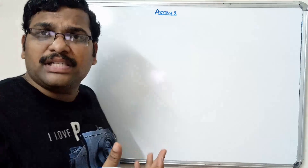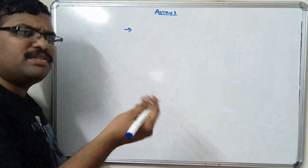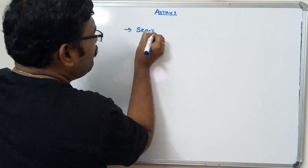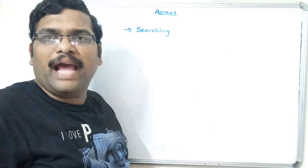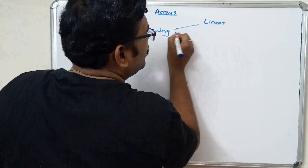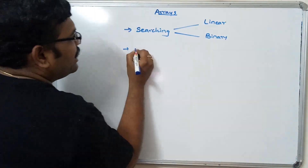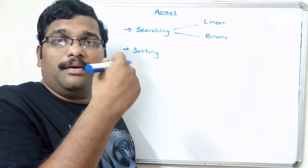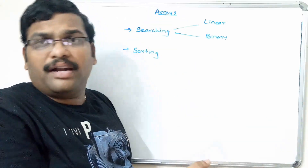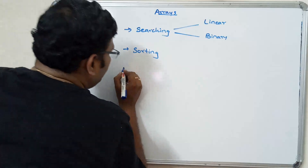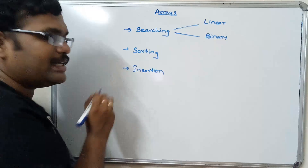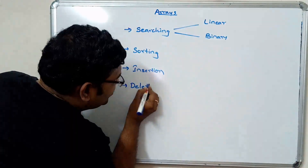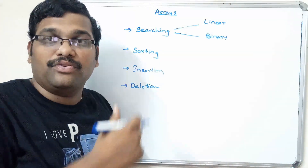There are different operations we can perform on arrays. First, searching — we have covered linear search and binary search. Another important operation is sorting, where we covered bubble sort, insertion sort, and selection sort. We also covered insertion, which means inserting an element into an existing array, and deletion, which means deleting an element from an existing array.